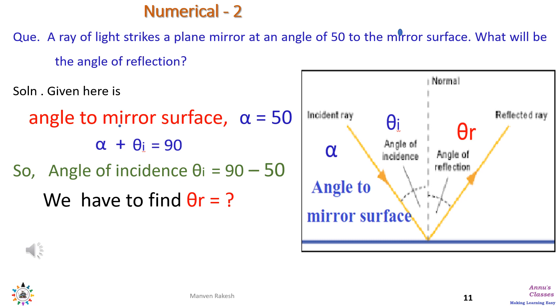So we have to calculate angle of incidence that will be 90 degrees minus 50 degrees, because normal is 90 degrees. The incident ray divides the normal and the mirror surface, so α plus θi would be 90 degrees, and so θi would be 90 minus 50, which equals 40 degrees.